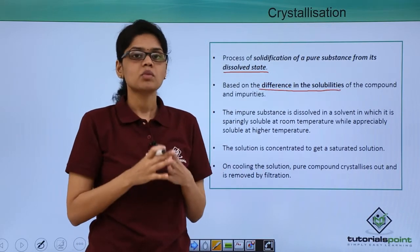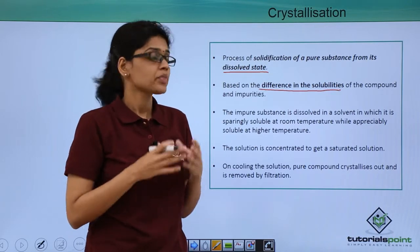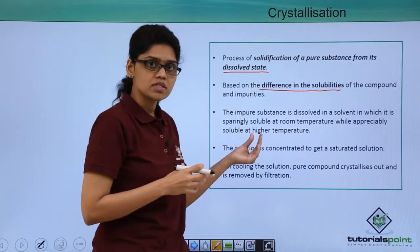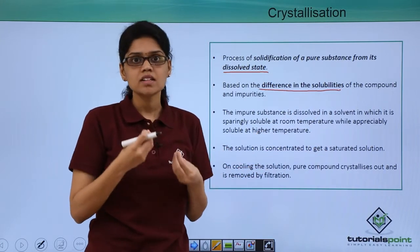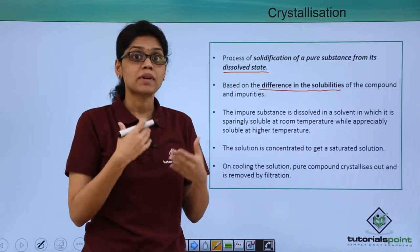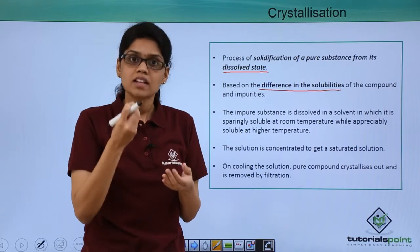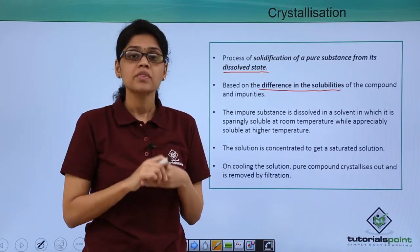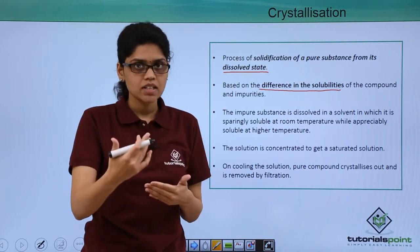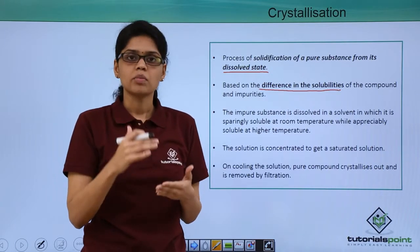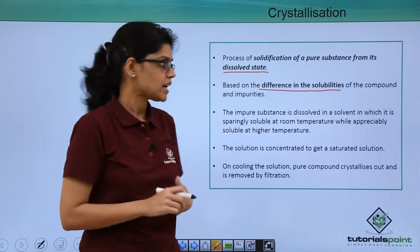To have a brief overview of crystallization, the impure substance is dissolved in a solvent in which it is sparingly soluble. What do we mean by sparingly soluble? It is less soluble at room temperature. However, when we heat the solution or as the temperature increases, solubility of the compound also increases.